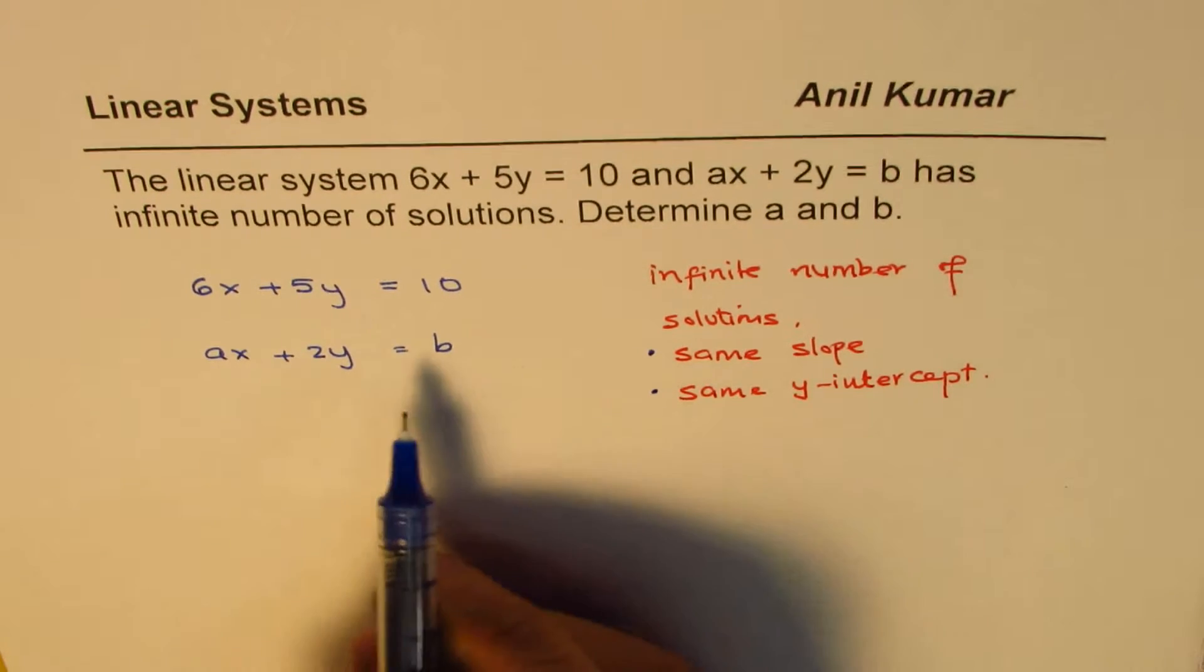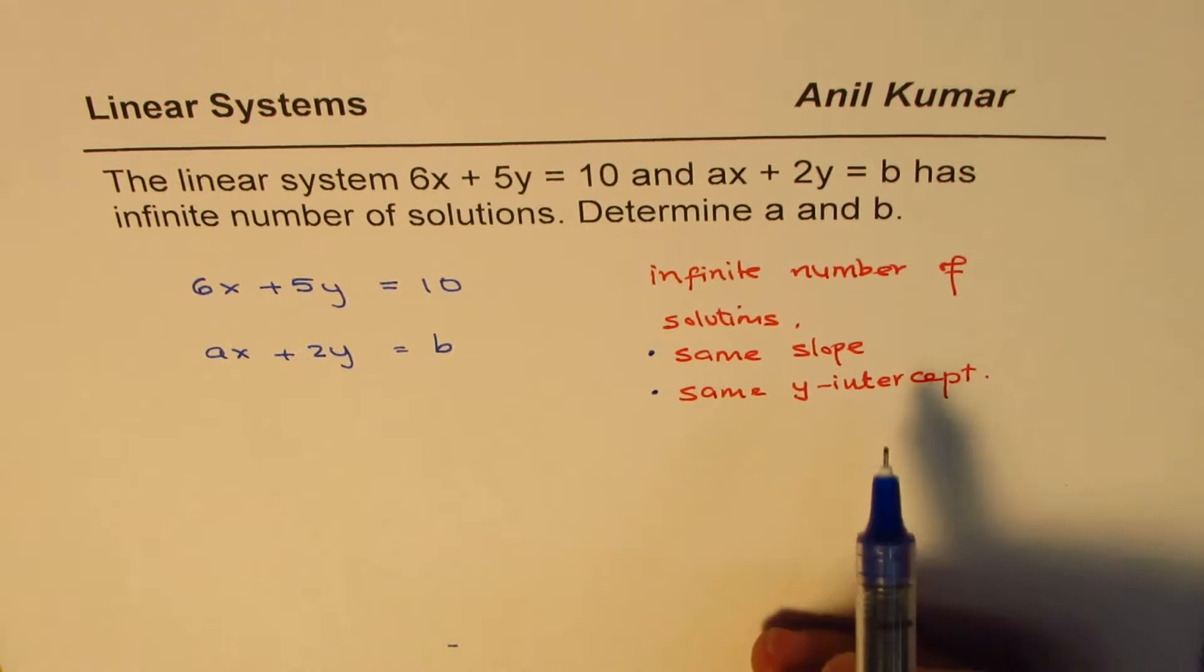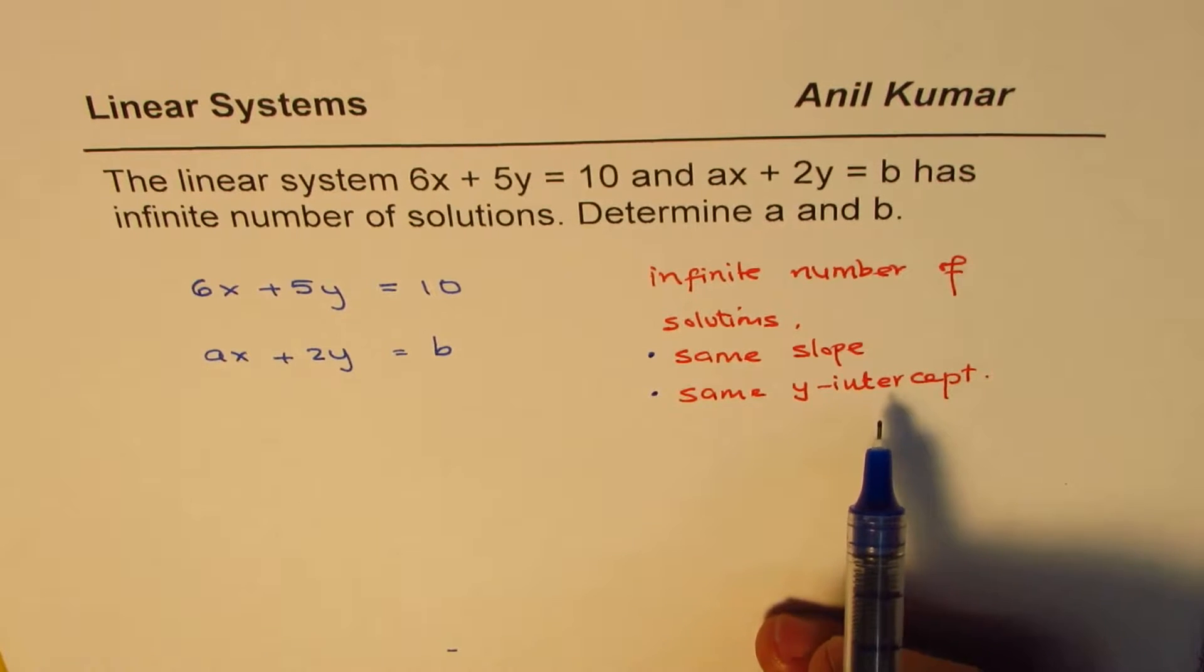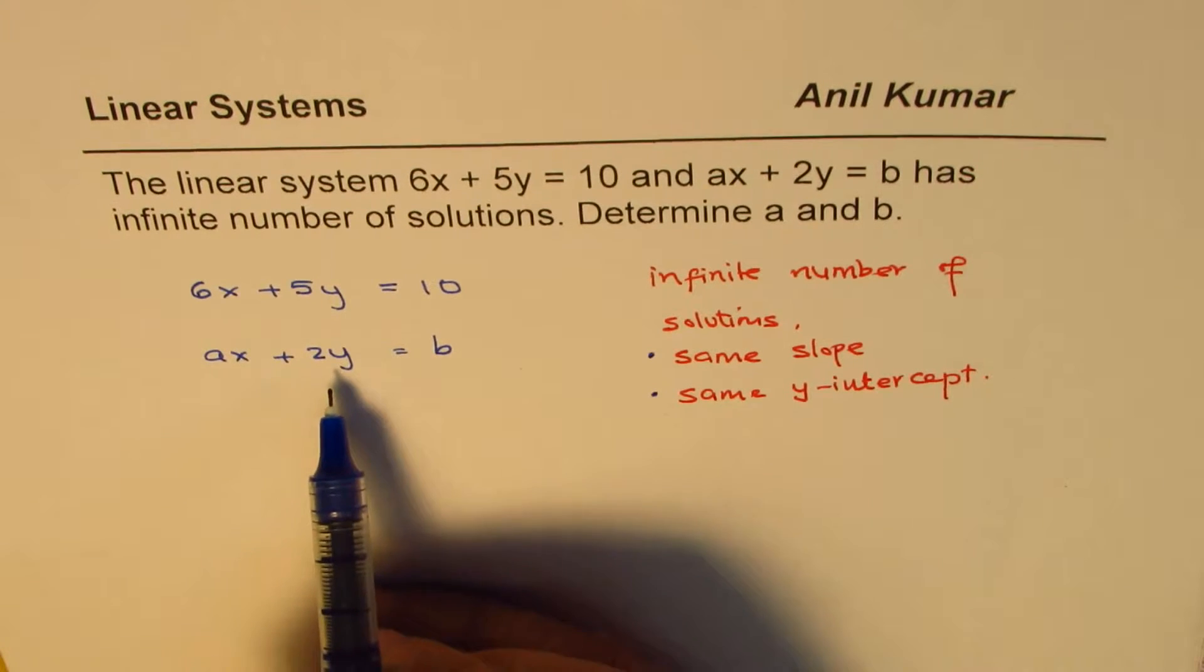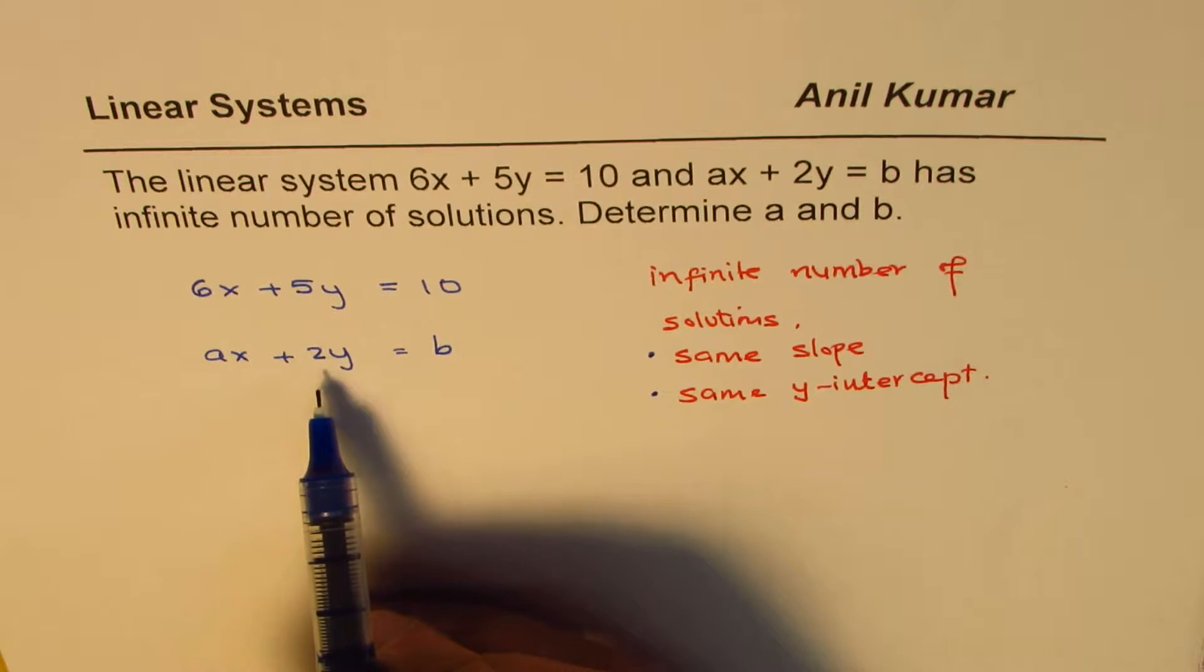Now one way is we can always write them in the form of slope and intercept and compare them. The other way is we could find a number so that if I multiply one equation by that number I get the other equation. That's another way of doing it.